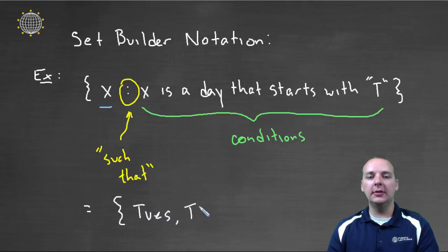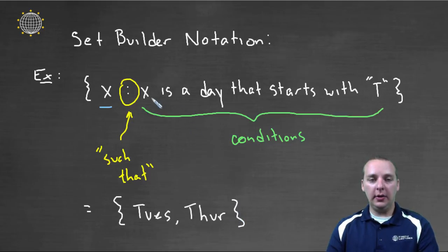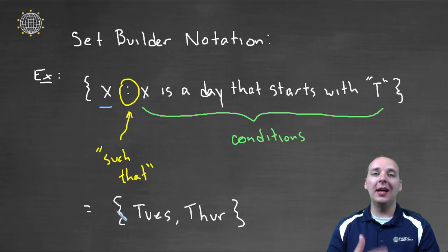So, this is equivalent to the set of Tuesday, Thursday. Because those are all the X's, like you think through everybody, all the X's that are a day of the week that start with the letter T, and we'll fill up our set with elements that satisfy that criteria. So this is how we do set builder notation.